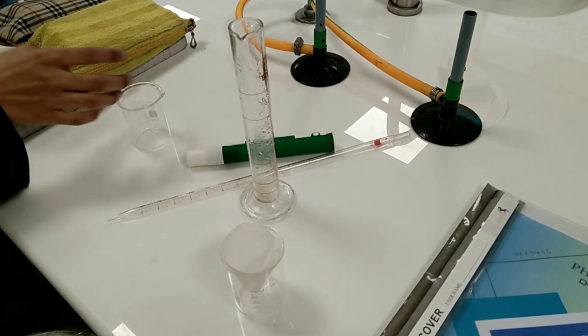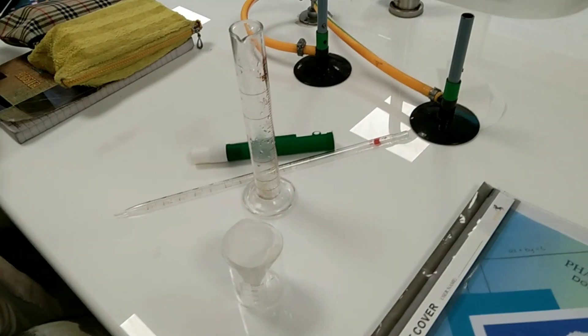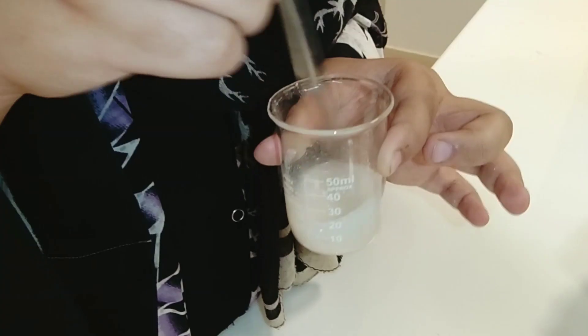After filtering, we will add 16.4 gram of sucrose, as we are preparing 20 ml of orange syrup.